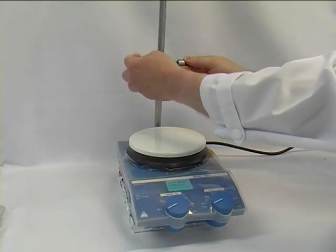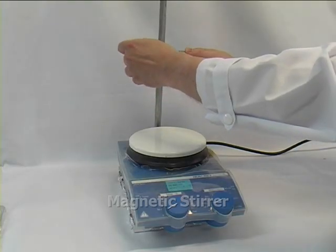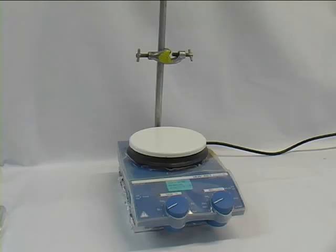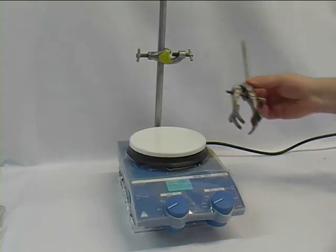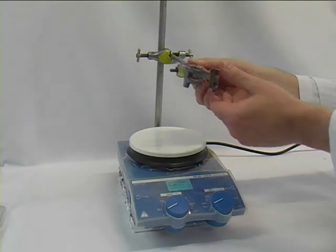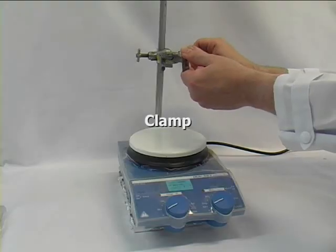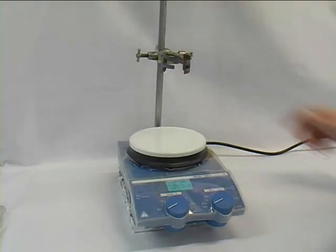So we have a retort stand with a magnetic stirrer, where I position now a boss. As you can see, the boss's opening points upwards. We'll put in a clamp. That's the second part I'll put in. We fix it.